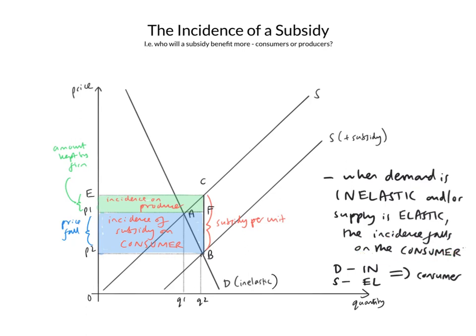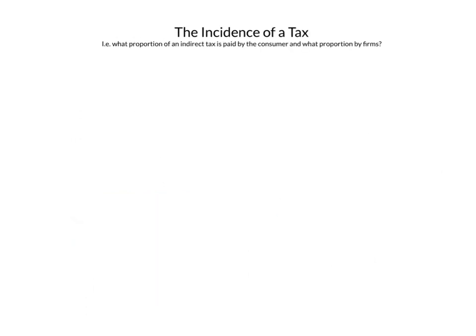DIN SELL — demand inelastic, supply elastic. Think of the big DIN of selling in a big supermarket. It's the same rule for tax, but in that case it's extremely unwelcome. In this case, the consumer wants the incidence to fall on them because they get a lot of subsidy. No consumer would want a lot of tax.